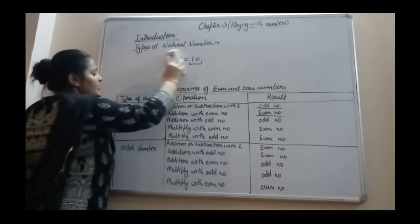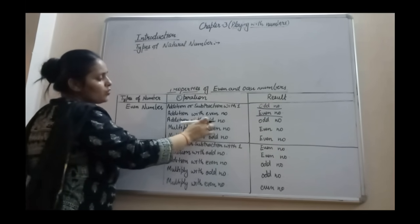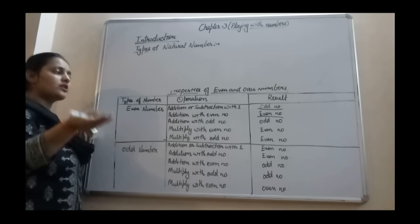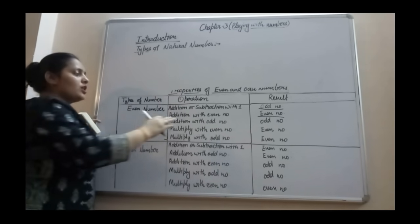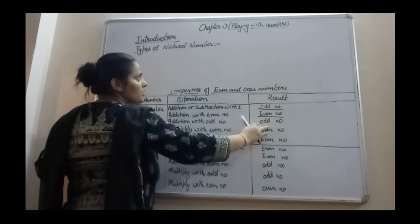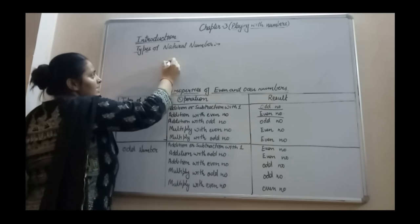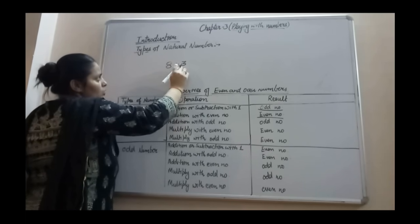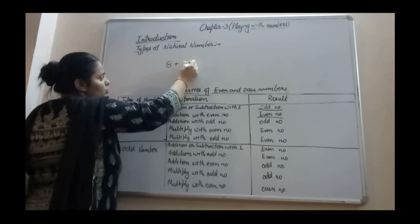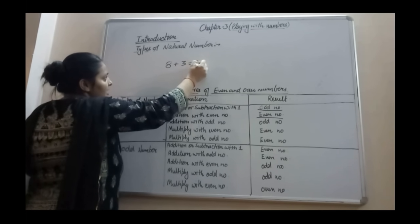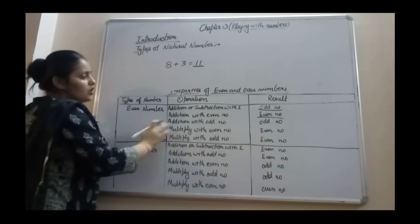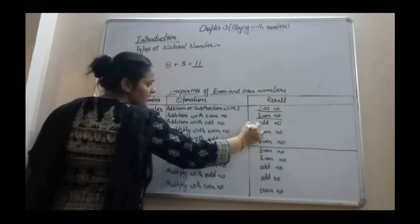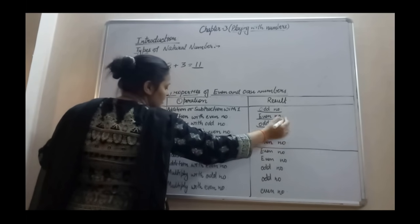Third property: even number plus odd number. When you add an even number with an odd number, your answer is an odd number. For example, 8 is an even number and 3 is an odd number. When you add them you get 11, which is an odd number. So addition of an even number with an odd number results in an odd number.